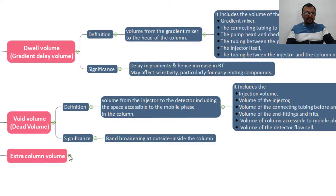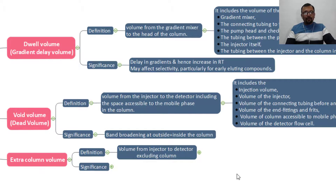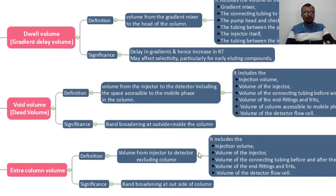The third term is called the extra column volume. The extra column volume is the volume from the injector to the detector, excluding the column — that is, excluding the space accessible to the mobile phase within the column. It can also cause band broadening outside of the column. The extra column volume consists of the void volume minus the space accessible to the mobile phase in the column.